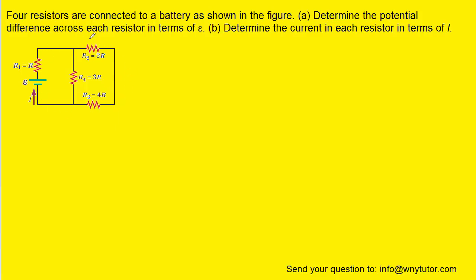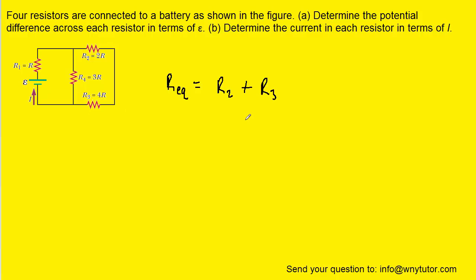The first thing to note is that this resistor here and this resistor here are in series. If you're not sure why they're in series, just think about current flowing through the circuit — it never has to split, meaning there's never a junction on this path. That places those two resistors in series with one another. When resistors are in series, we add their resistances, so the equivalent resistance is R2 plus R3, which gives us 6R.